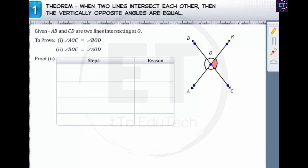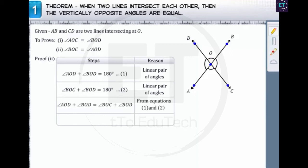Next, we need to prove that angle BOC is equal to angle AOD. Again, since AB is a line, the sum of angles AOD and BOD is equal to 180 degrees. Similarly, CD is a line. Therefore, the sum of angles BOC and BOD is equal to 180 degrees. Now, since the RHS of both equations 1 and 2 are equal, on equating the LHS of both equations, we get angle AOD which is equal to angle BOC.